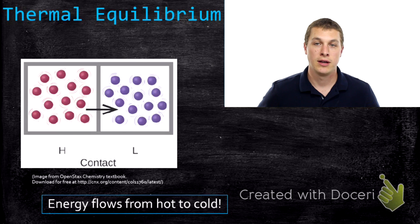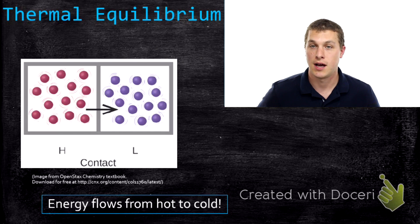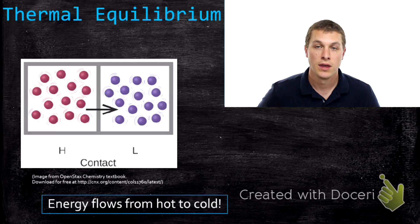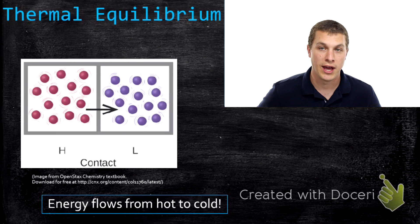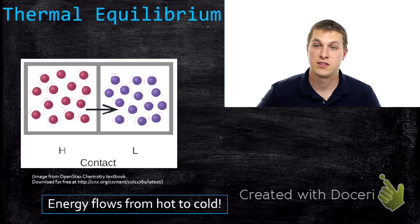Basically what we're thinking about here is putting two objects into contact, one that's hot and one that's cold. And over the long run, the cold object will get warmer and the hot object will cool down. Eventually they'll approach the same temperature.